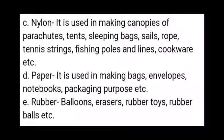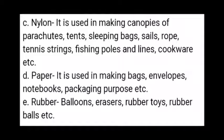C) Nylon — it is used in making canopies of parachutes, tents, sleeping bags, sails, rope, tennis strings, fishing poles and lines, cookware, etc. D) Paper — it is used in making bags, envelopes, notebooks, and for packing purposes, etc. E) Rubber — it is used to make balloons, erasers, rubber toys, rubber balls, etc.